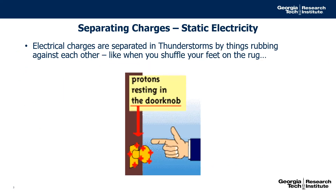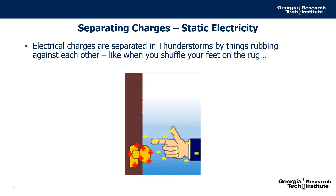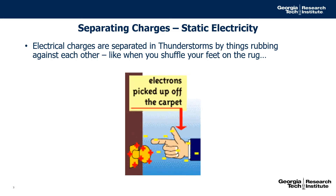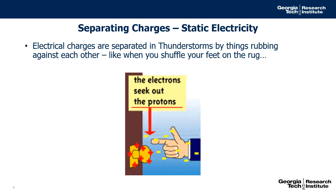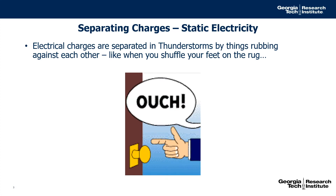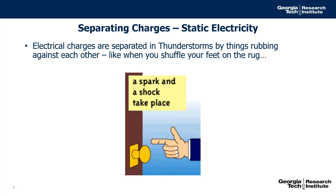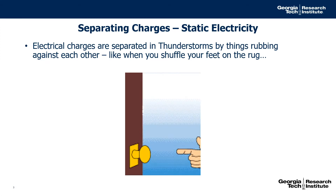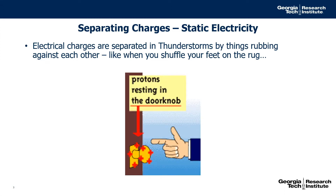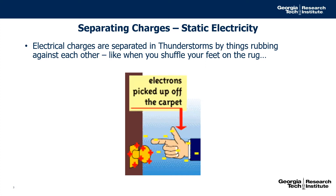The electricity in a thunderstorm is what's called static electricity. It's caused by separating charges. We can separate charges at home also. This often happens in the wintertime when we rub our feet on the rug. By rubbing our feet on the rug, we separate charge and end up with negative charge on our bodies.